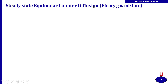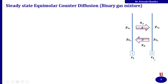For steady-state equimolar counter diffusion in a binary gas mixture, consider a similar system where interface 1 is at position Z1 and interface 2 is at position Z2. The total diffusion distance is Z2 − Z1. A is diffusing in one direction and B is diffusing in the opposite direction. The total pressure satisfies Pa1 + Pb1 = Pa2 + Pb2.